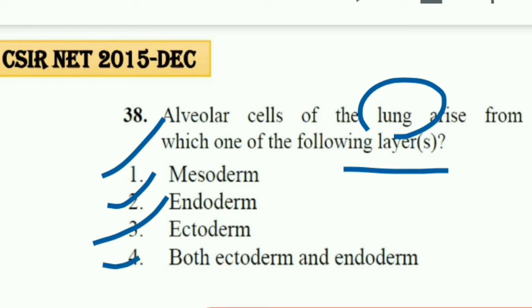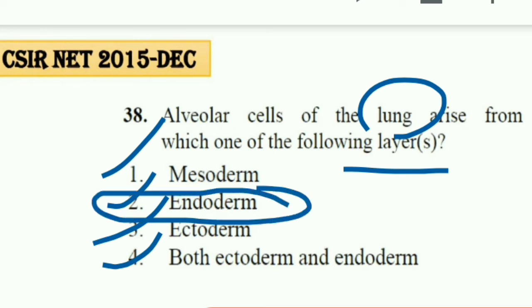The right answer to this question is the second option — endoderm. Alveolar cells of the lung arise from endoderm. Thank you.